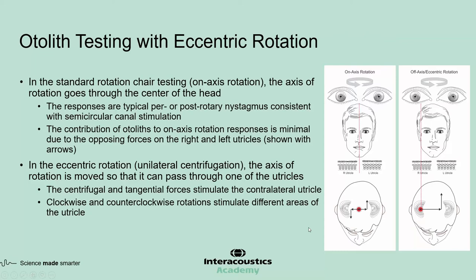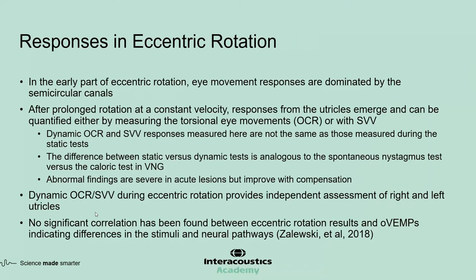In eccentric rotation, also called unilateral centrifugation, the axis of rotation is moved so that it passes through one of the utricles. Rotation about this axis generates centrifugal and tangential forces that stimulate the contralateral utricle, with clockwise and counterclockwise rotations stimulating different areas. The early response is from the semicircular canals, but after prolonged rotation at constant velocity, canal responses subside and utricular responses become apparent.